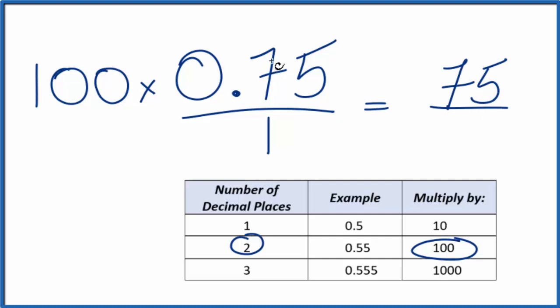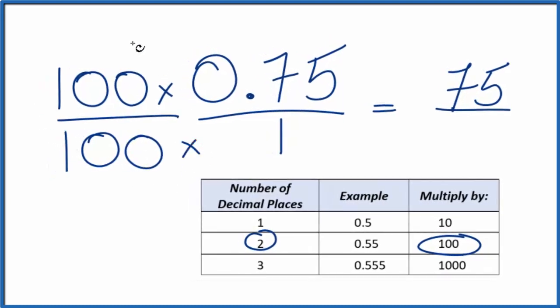But 0.75 is not equal to 75. So we have to multiply the bottom by 100 as well. Think of it this way. 100 over 100, that's just 1. We're not changing the quantity.